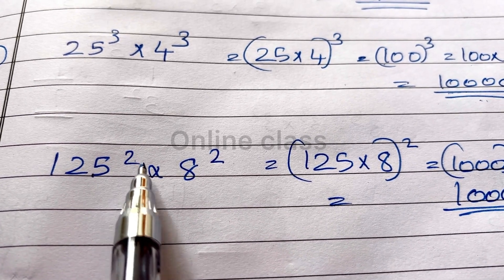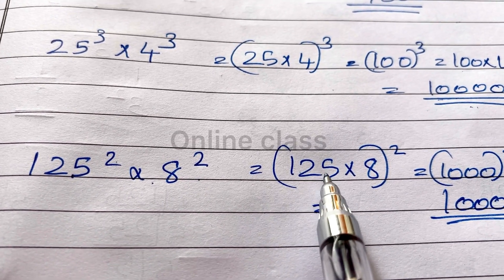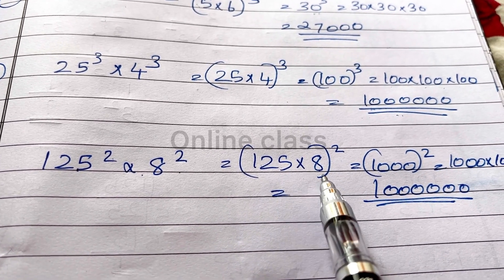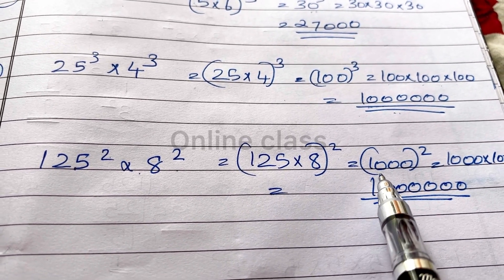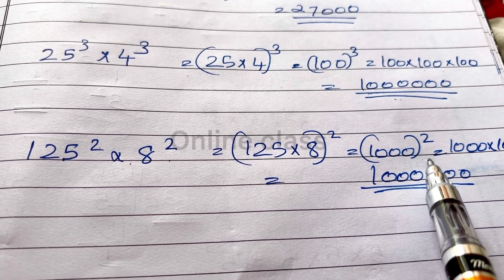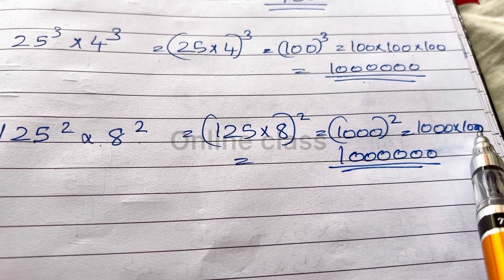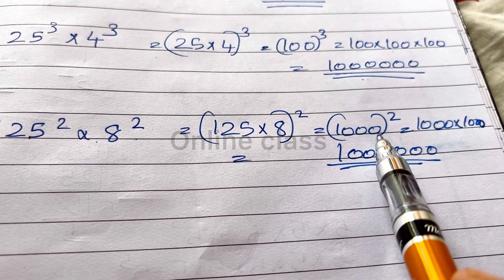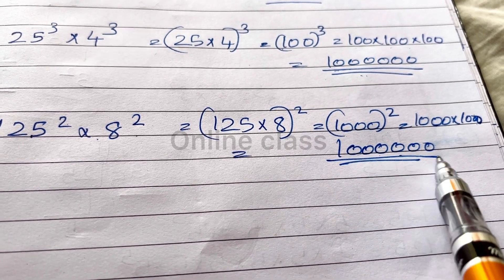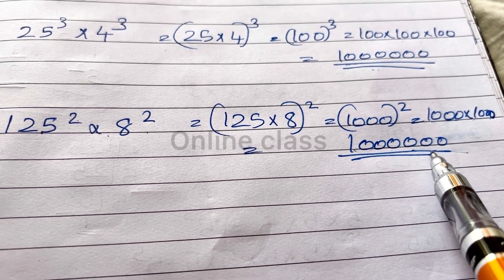Next, 125 square into 8 square. 125 into 8, whole square. 125 into 8 is 1000. 1000 whole square is 1000 into 1000. Counting the zeros: 1, 2, 3 and 3, giving us 6 zeros total — the answer is 1,000,000.